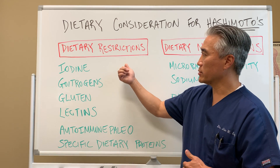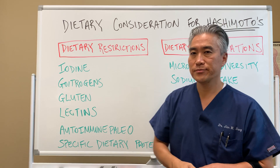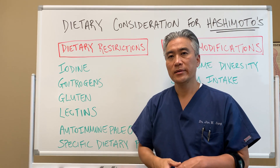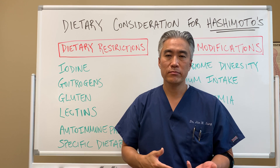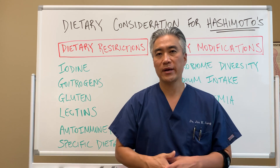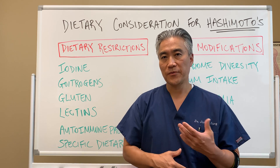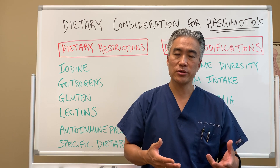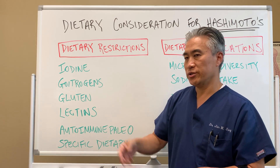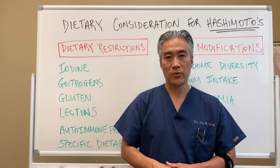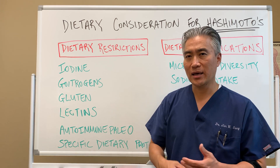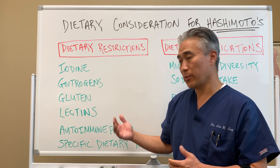Today we're going to talk about dietary restrictions. There's a lot of controversy about iodine — is it good or is it bad? Well, it depends. If you have Hashimoto's thyroiditis, it might not be the best thing for you. If you have another condition, iodine might be good for you. Goitrogens are bad for our thyroid. Gluten — good or bad? Lectins, nuts, seeds, and those types of things — good or bad?